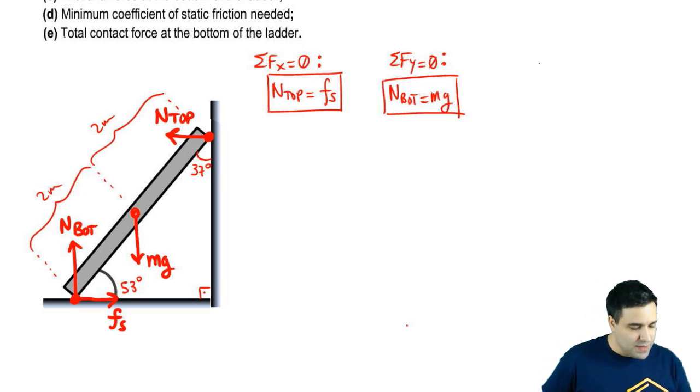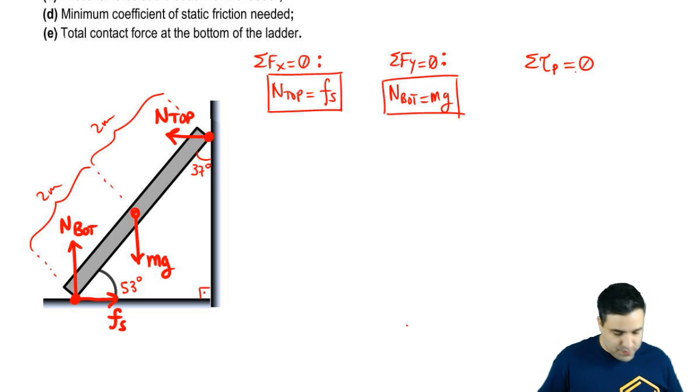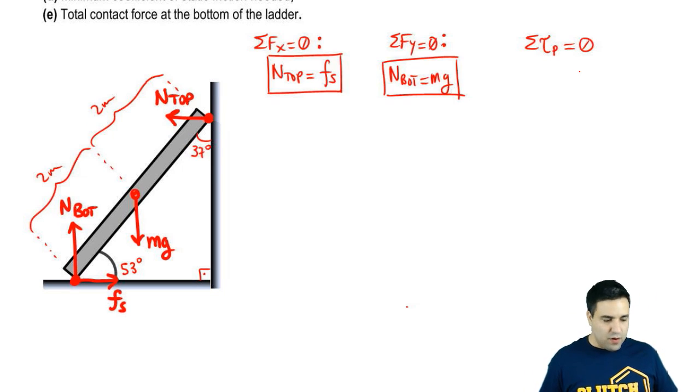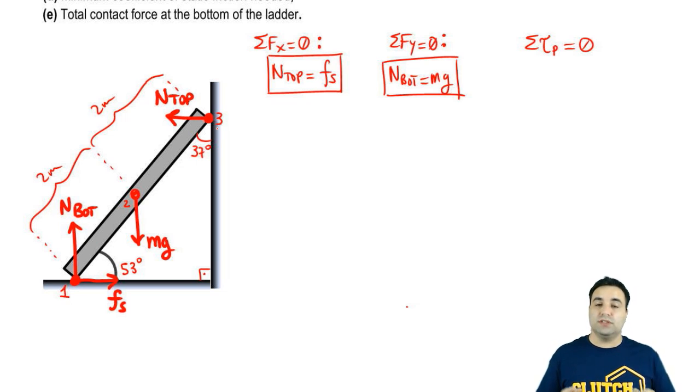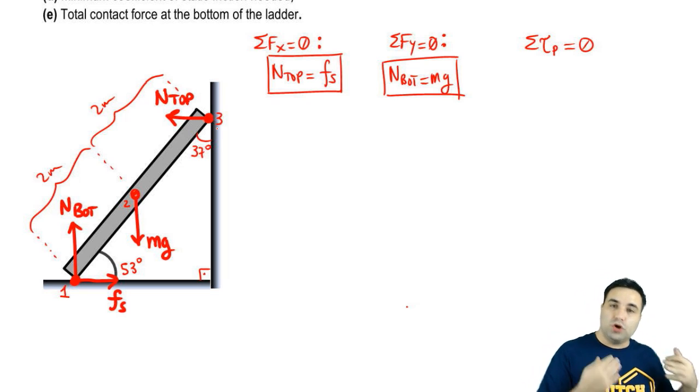And I can write more equations. Now I can write torque equations. Sum of all torques at any point P equals zero. And there are three points here where I might want to write this. There is the point one here at the bottom, two at the middle, and three at the top. These are points where forces happen. Remember, you want to write your torque equations about the point where a force happens so you have fewer terms when you write out the torque equation.